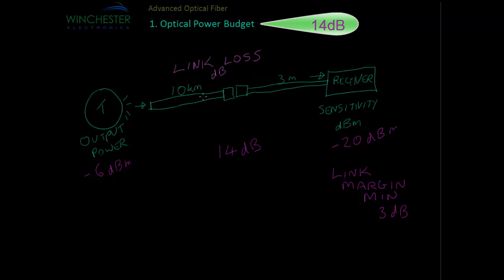With 10 km of fibre, let's assume that's single mode fibre with a loss of 0.3 dB per kilometre, so we have 3 dB of loss in this section. And we have a connector — different connectors have different insertion losses, but typical is around 0.3 to 0.5 dB when you're doing these kinds of calculations. You can get a lot better loss when the connector is first plugged in. So for this calculation to be conservative, we would use 0.4 dB per connector.